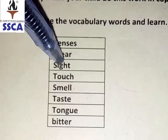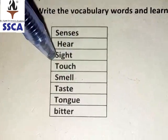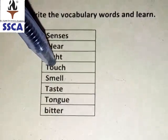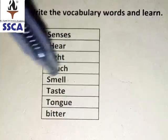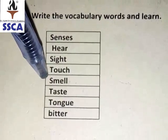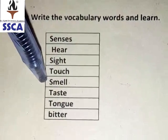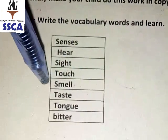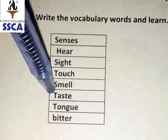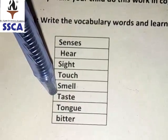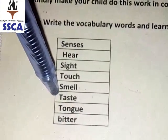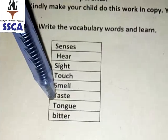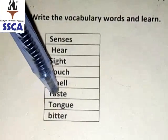The fourth one is Touch — T-O-U-C-H — Touch. The fifth is Smell — S-M-E-L-L — Smell. The sixth is Taste — T-A-S-T-E — Taste. The seventh is Tongue — T-O-N-G-U-E — Tongue.